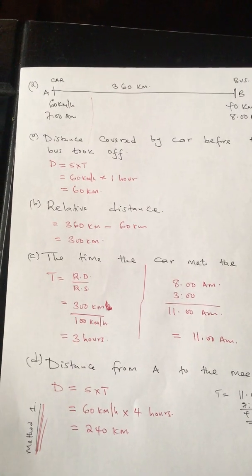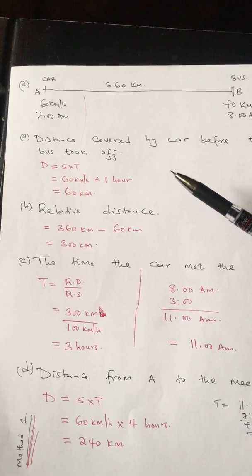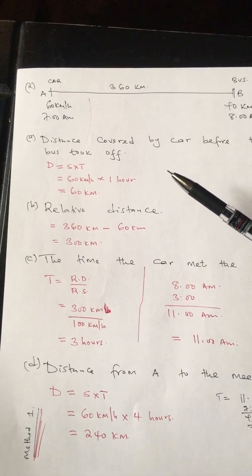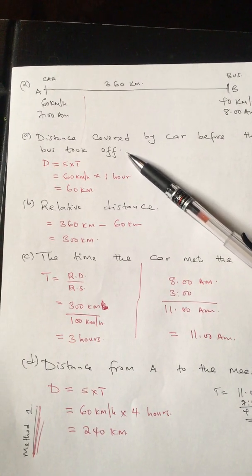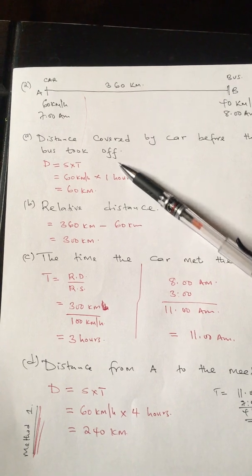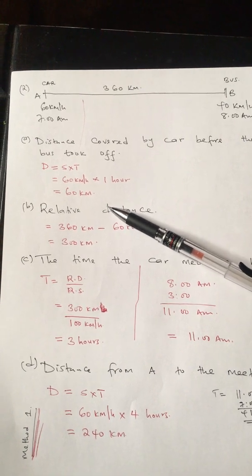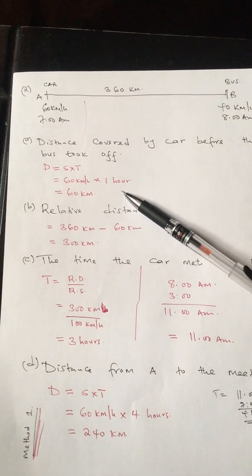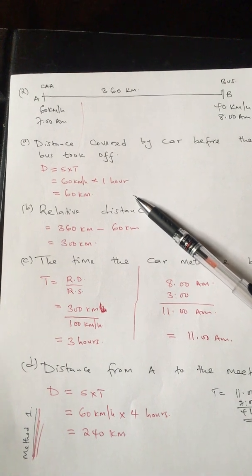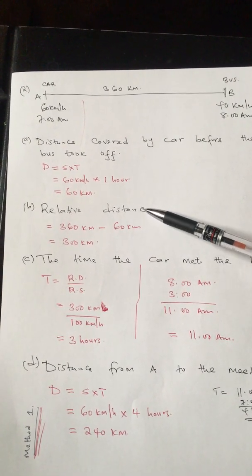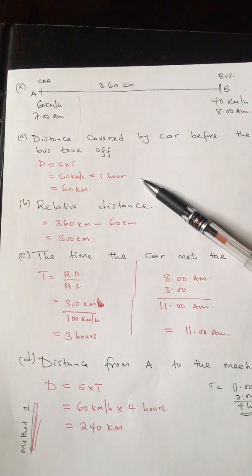This is the second lesson continuation on what I had explained previously. I was explaining things to do with relative speed and approaching bodies. In the previous part I did one example that I called basic, because as you keep working out the questions there are some small changes. Today I'm going to show you the second example — notice the difference. If what I'm doing is helpful, please show some love, like and share.